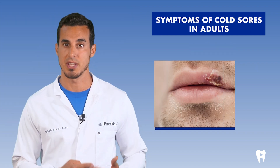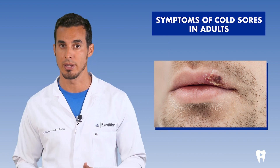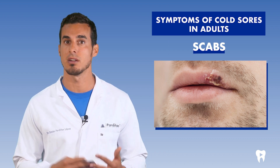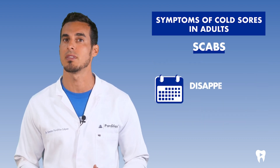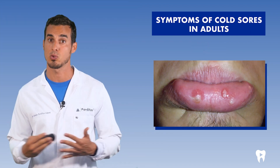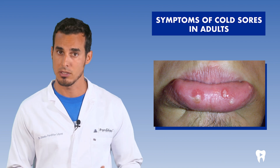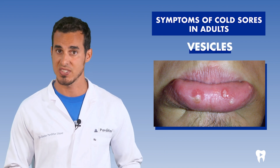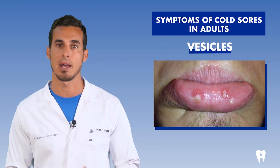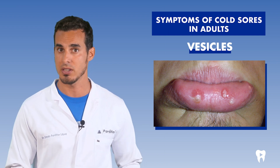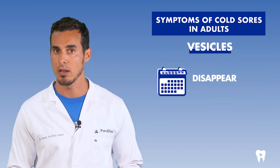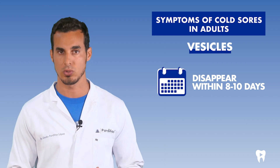The blisters generated in the previous stage dry out and break, producing shallow open sores that present discharge and form a scab. These scabs disappear within 8 to 15 days. In some cases, herpes spreads through the inside of the mouth. The appearance of symptoms consists of patchy vesicles similar to those of cold sores, located mainly on the palate and gums. These vesicles ulcerate very quickly, causing inflammation and pain, and usually heal without a scar within 8 to 10 days.